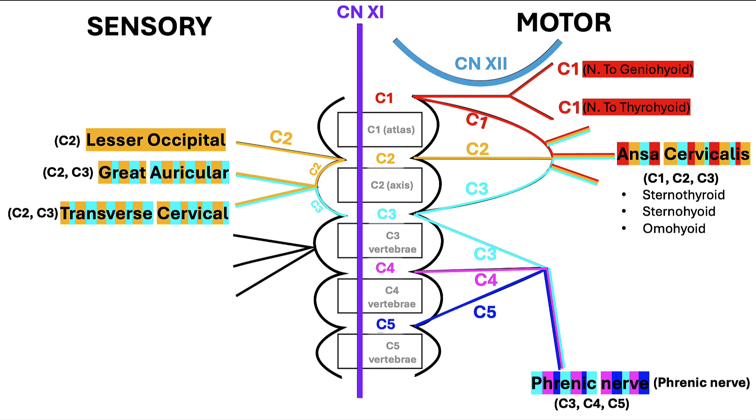While the transverse cervical nerve provides skin innervation to the skin in the anterior triangle of the neck. This is an easier sensory branch to identify in lab since it travels transversely from the posterior border of the sternocleidomastoid across the muscle itself to get to the anterior triangle neck skin.